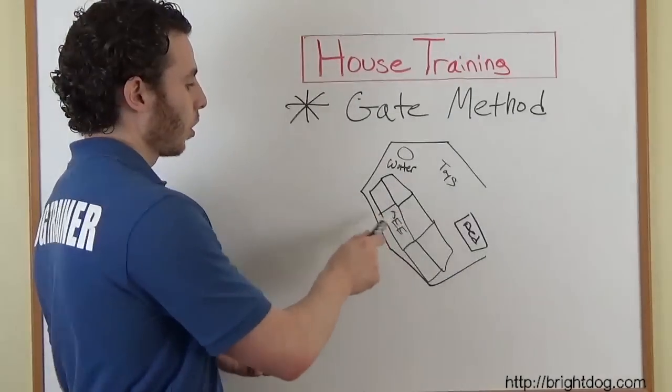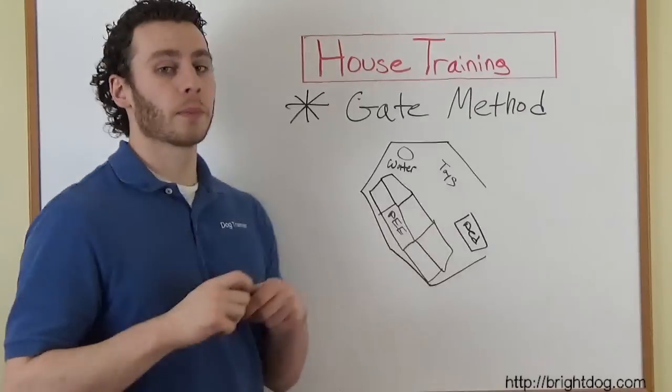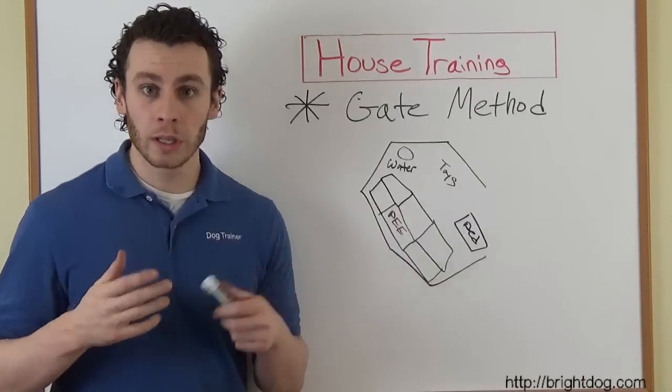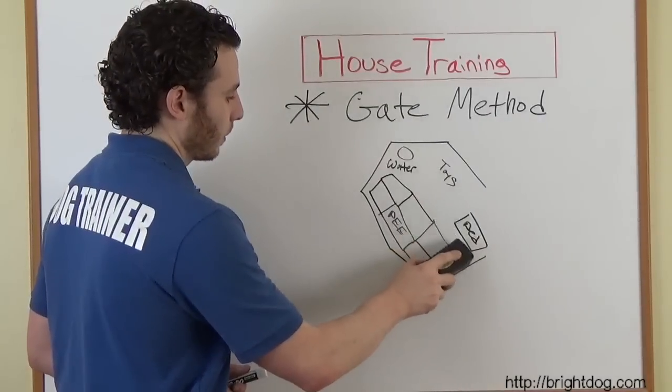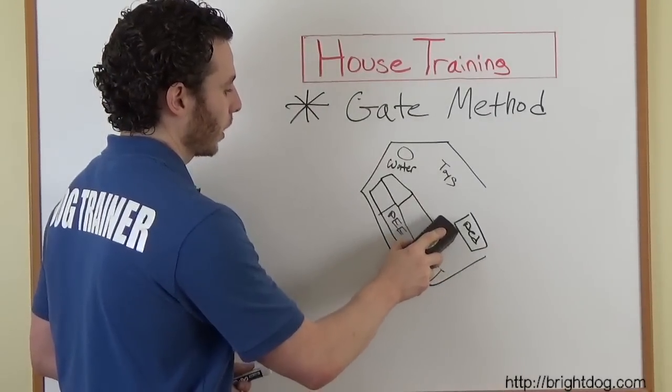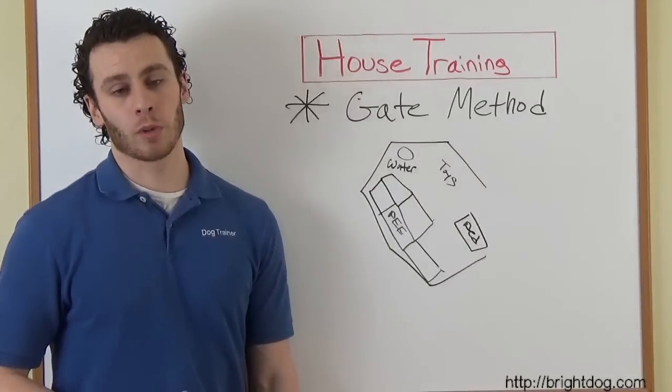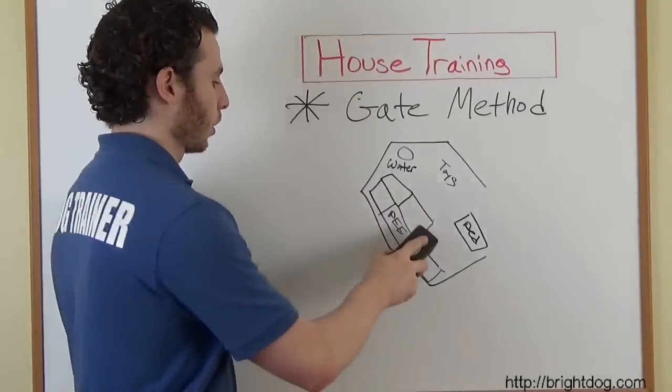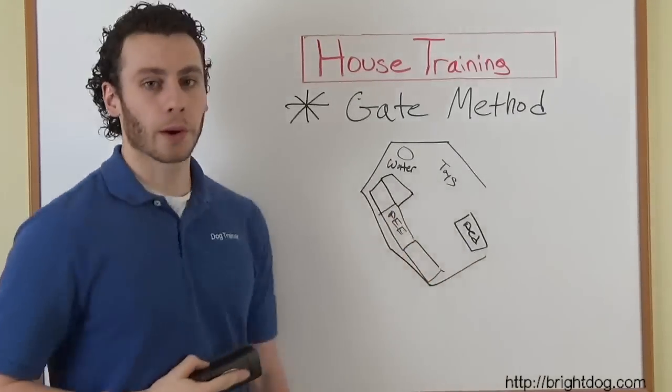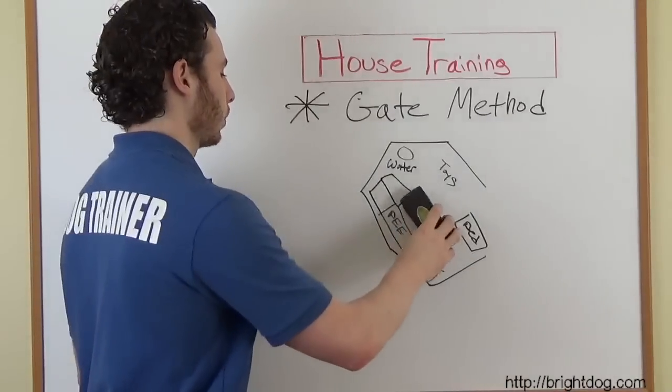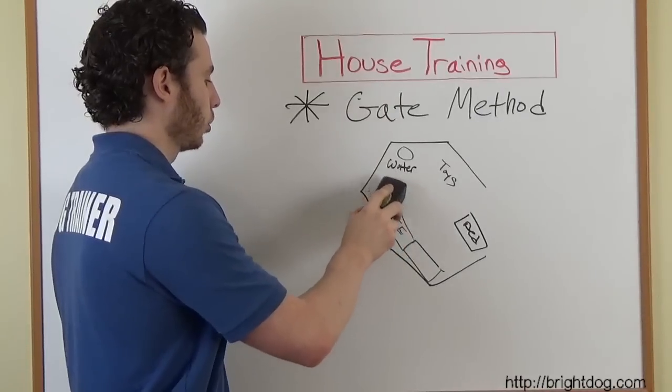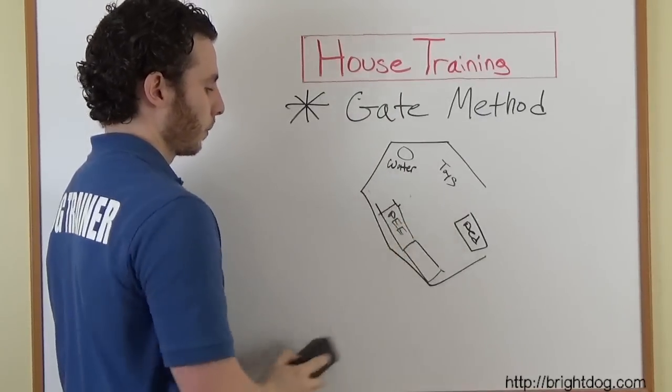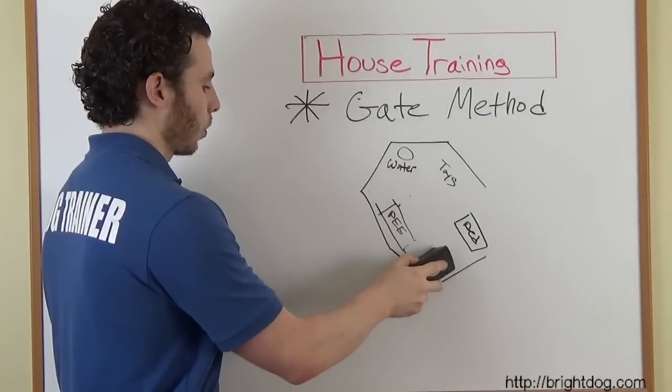Now, does he use the pee pads forever? Absolutely not. We start off with all six of these pee pads, and what we start doing is we start weaning them away. So we start off with a lot of them, and then after maybe two weeks, we pick one up. And now we only leave five pee pads down. And after another week, we start picking another one up. And now we're down to four. And the next week, we go down to three. And then pretty soon, we go down to two, and then eventually one. And now we're down to one pee pad.